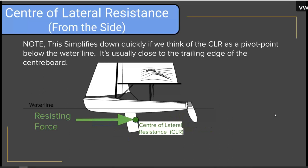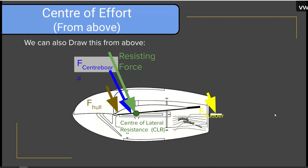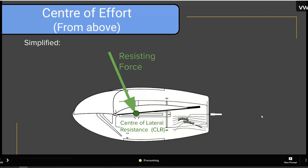Here's our simplified diagram showing just one force and one point. But remember that this green arrow — the resisting force — represents all of the forces on the hull, the rudder, and the centerboard. We can also draw this from above. The only reason I'm showing you from the side and from above is to get you comfortable with the idea of turning objects around in your head — thinking about what an arrow pointing front-to-back looks like from the side versus from the top.